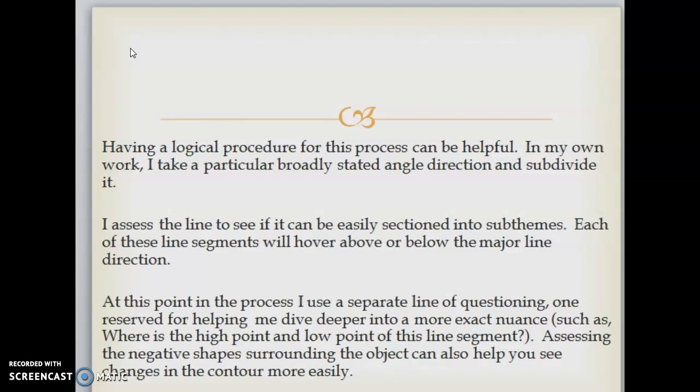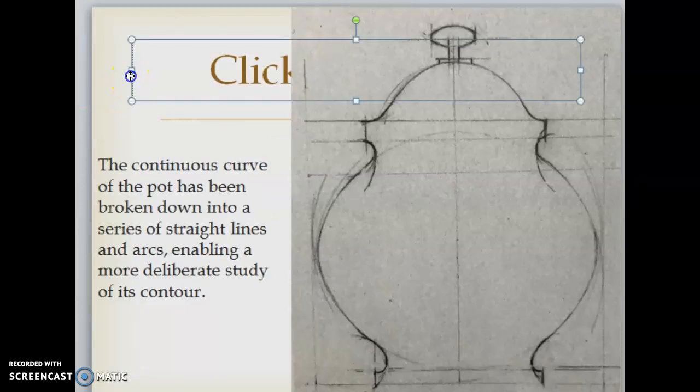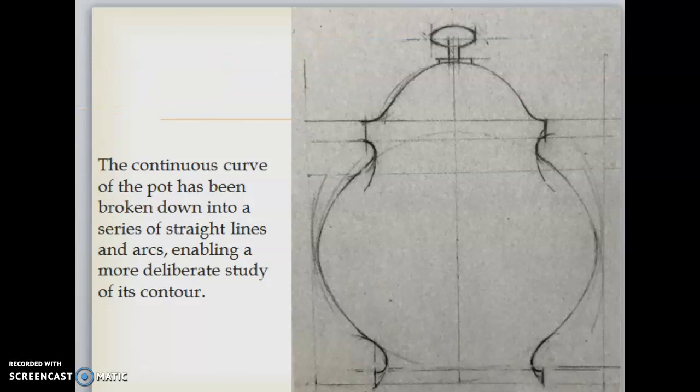Having a logical procedure for this process can be helpful. In my own work, I take a particularly broad-stated angle direction and subdivide it. I assess the line to see if it can be easily sectioned into subthemes. Each of these line segments will hover above or below the major line direction. At this point I use a separate line of questioning, one reserved for helping me drive deeper into more exact nuance — such as where is the high point and low point of this line segment. Assessing the negative shapes surrounding the object can also help you see changes in the contour more easily. The continuous curve of the pot has been broken down into a series of straight lines and arcs, enabling a more deliberate study of its contour.